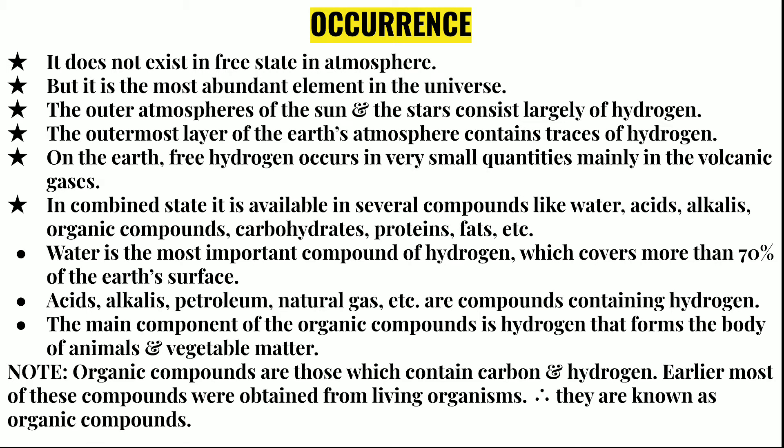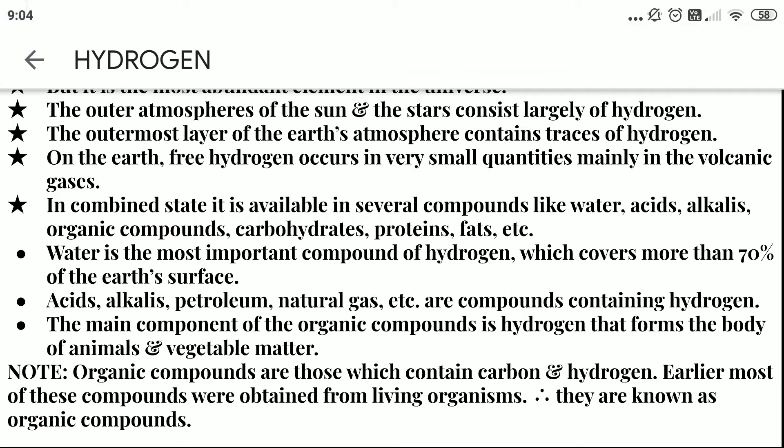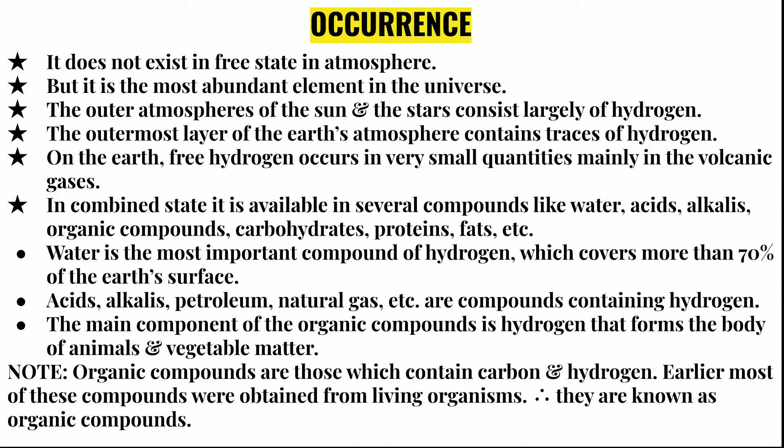Hydrogen does not exist freely in the atmosphere. In the free state it cannot be found in the atmosphere. But it is the most abundant element in the universe. The outer atmospheres of the sun and the stars consist largely of hydrogen. The outermost layer of the earth's atmosphere contains traces of hydrogen. On the earth, free hydrogen occurs in very small quantities, mainly found in volcanic gases.